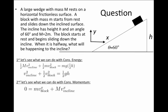If we write that momentum is conserved in the x direction: initially, the momentum in the x direction is zero because the block is not moving. When the block is halfway down the incline, the mass of the block times its x-component of velocity plus the mass of the incline times its x-component of velocity must equal zero, to equal the initial momentum. Therefore, the x-component of the block's velocity equals minus the ratio of the two masses times the x-component of the incline's velocity.